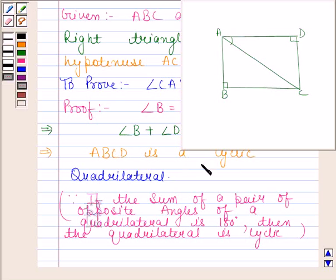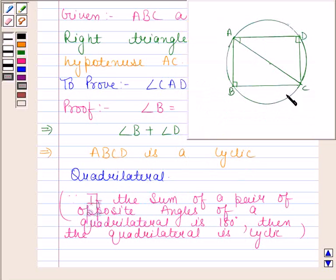So as ABCD is a cyclic quadrilateral, therefore we can draw a circle passing through these four vertices. So we have drawn a circle passing through all the vertices.